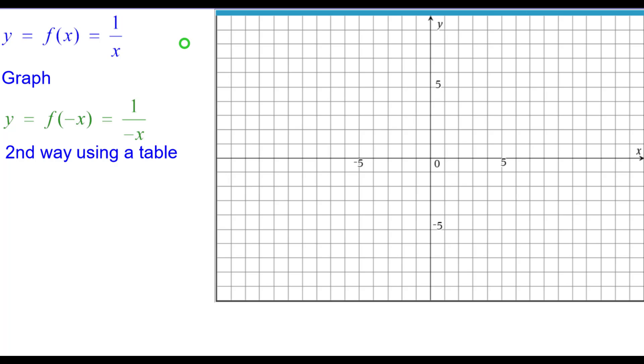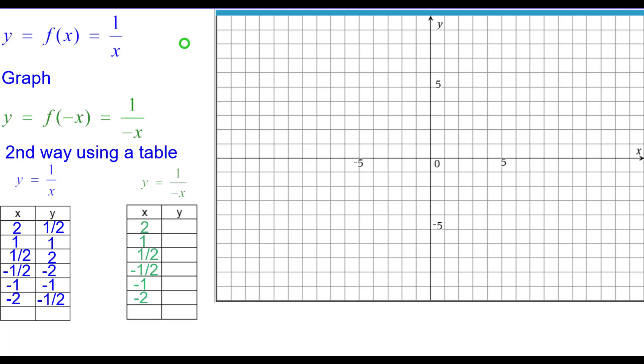Second way using a table. These are our six values that we usually like to plot. So one over the opposite of x, we'll use the same x values. When x is two, one over the opposite of two is negative two. One over negative two, so that's negative a half. So two comma negative a half.